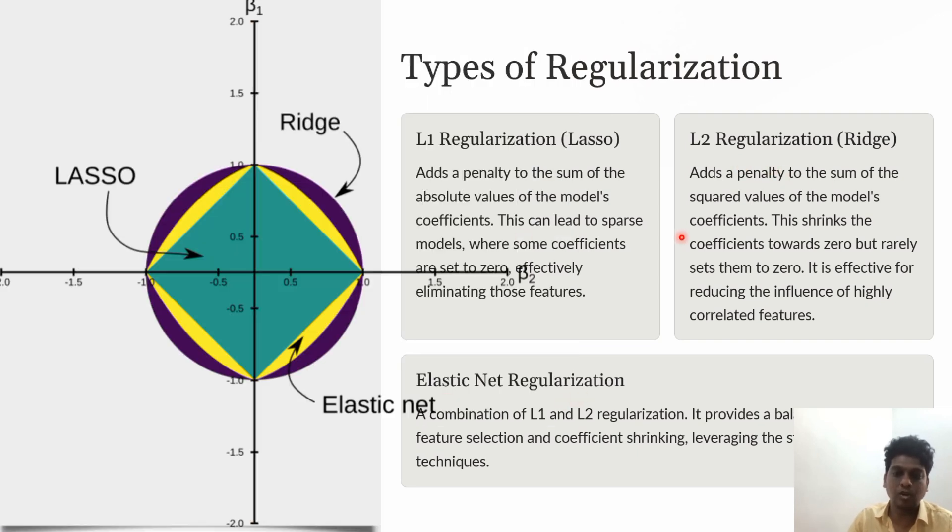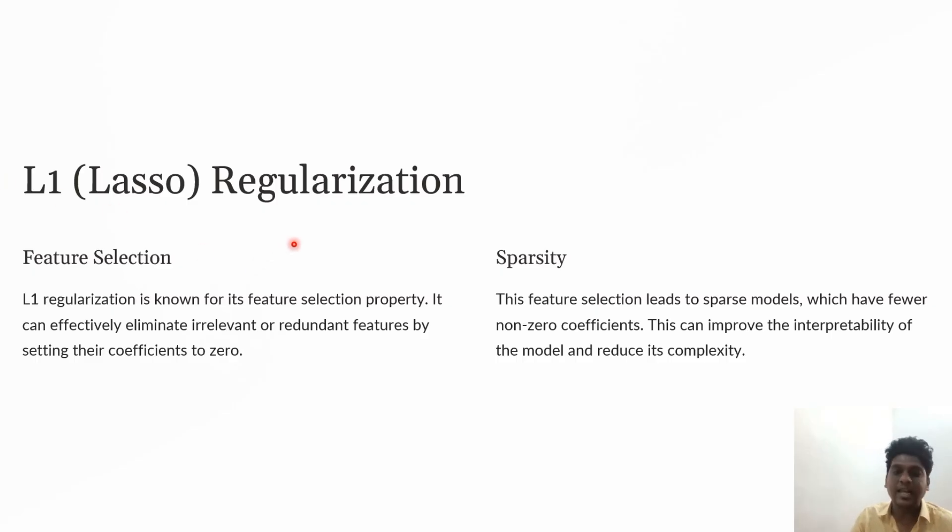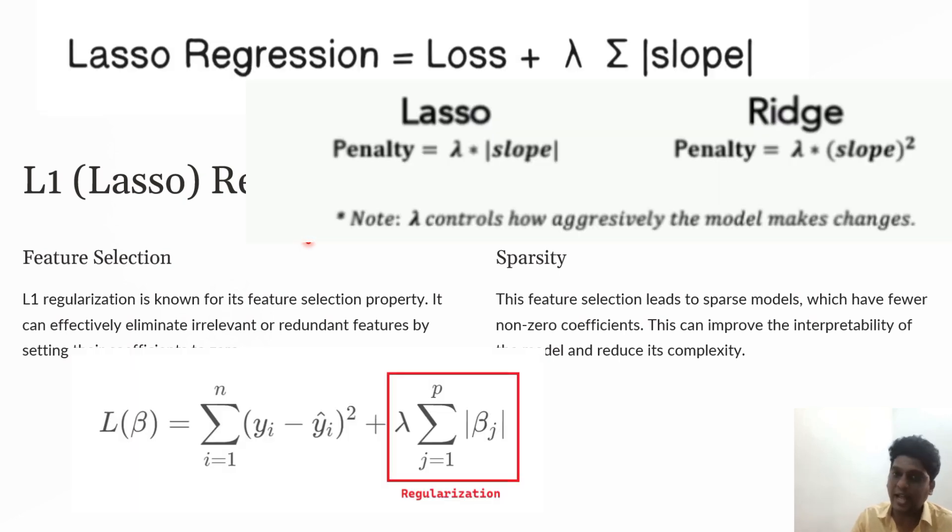Elastic Net combines both models, providing balance between feature selection and coefficient shrinking. Lasso stands for Least Absolute Shrinkage and Selection Operator. It adds the absolute value of coefficient magnitude as a penalty term to the loss function, helping achieve feature selection by penalizing weights to approximately zero.